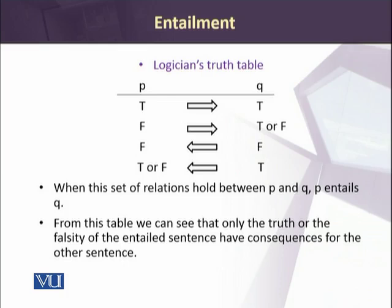In the truth table, we have P and Q at the top and can see the direction. If P is true — the first sentence is true — then Q is also true because P entails Q. If P is false, then Q can be true or false, as the question of entailment hardly arises in such situations. Reversing the situation: if Q is false, then P has to be false — if the emperor is not dead, the claim of an anarchist killing the emperor is also false.